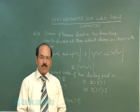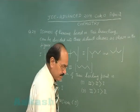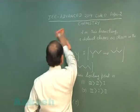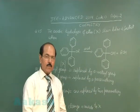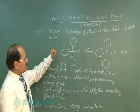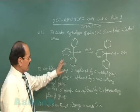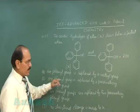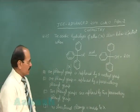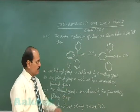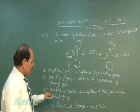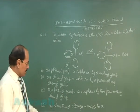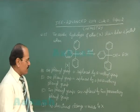We now move on to the next question, that is question number 25. The question reads: the acidic hydrolysis of ether X shown below is fastest when? Four options are given: one phenyl group is replaced by methyl group; one phenyl group is replaced by paramethoxy phenyl group; two phenyl groups are replaced by two paramethoxy phenyl groups; and the last option is no structural change is made to X.